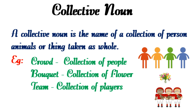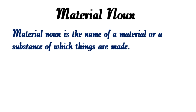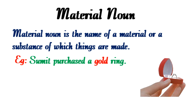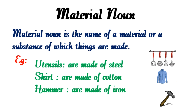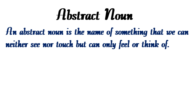A material noun is the name of a material or substance of which things are made. For example, 'Sumit purchased a gold ring' — here the object 'ring' is made of gold, so 'gold' is the material noun. 'The box is made of wood' — here 'wood' is the material noun. A few more examples: utensils are made of steel, a shirt is made of cotton, a hammer is made of iron.